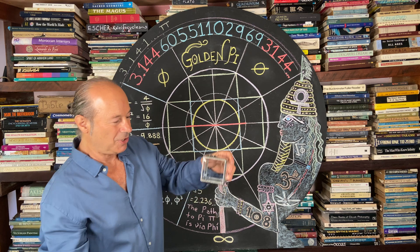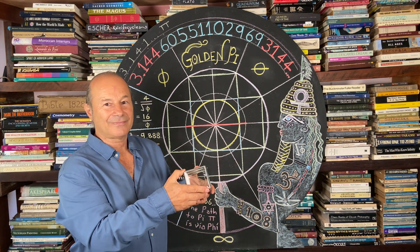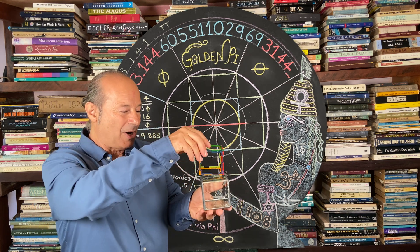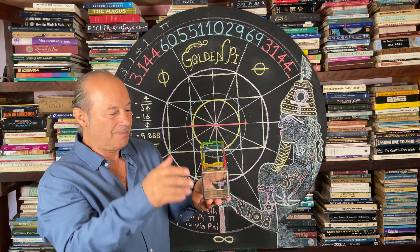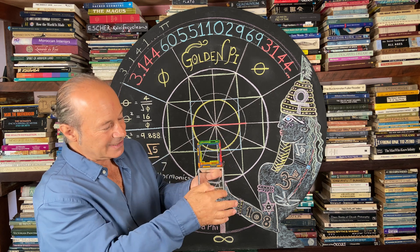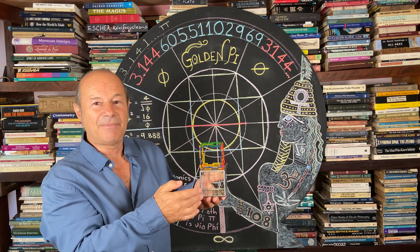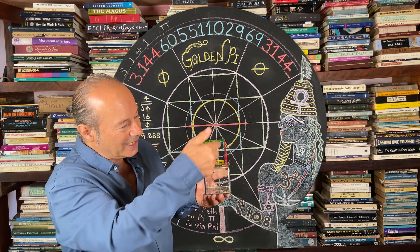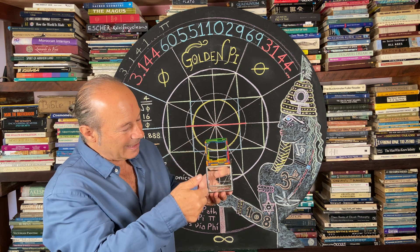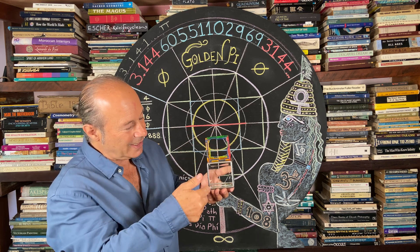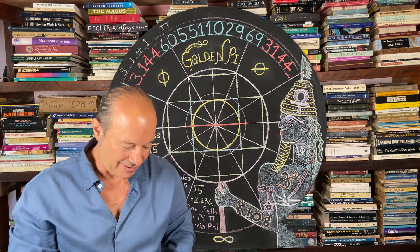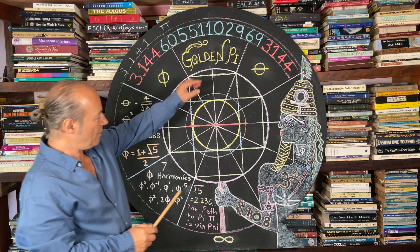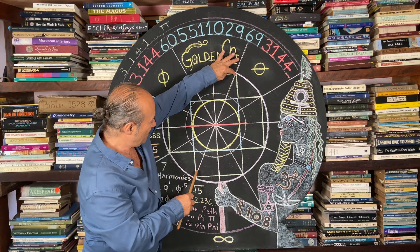Here we have a unit cube — a square 1 by 1. If I double my square, I've got a double cube, which is 1 by 2. Using Pythagoras' theorem, 1 squared plus 2 squared is 1 plus 4 equals 5. We now know that the distance from this point to that point — the diagonal of the double square — is called root 5, and root 5 has a value of 2.236.